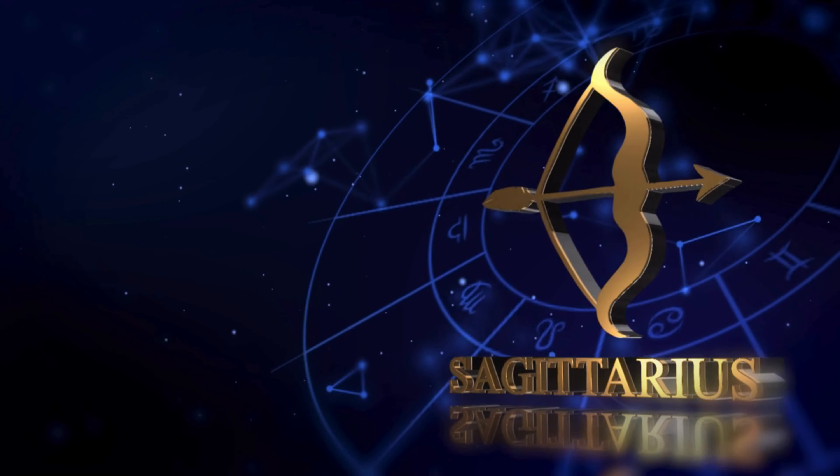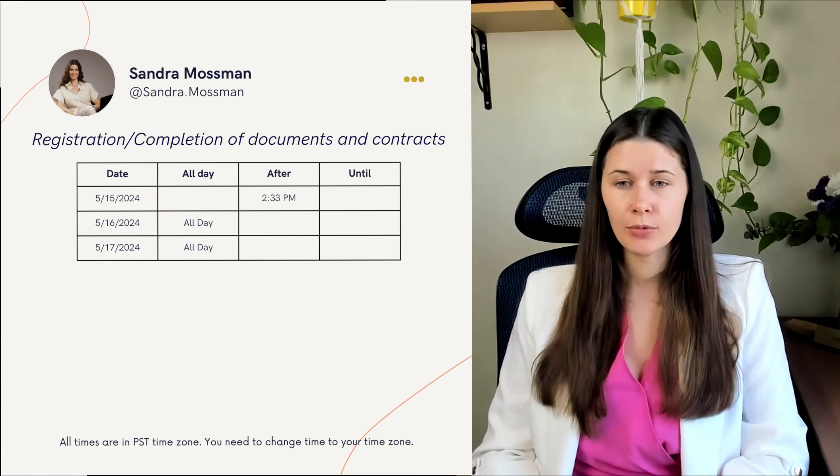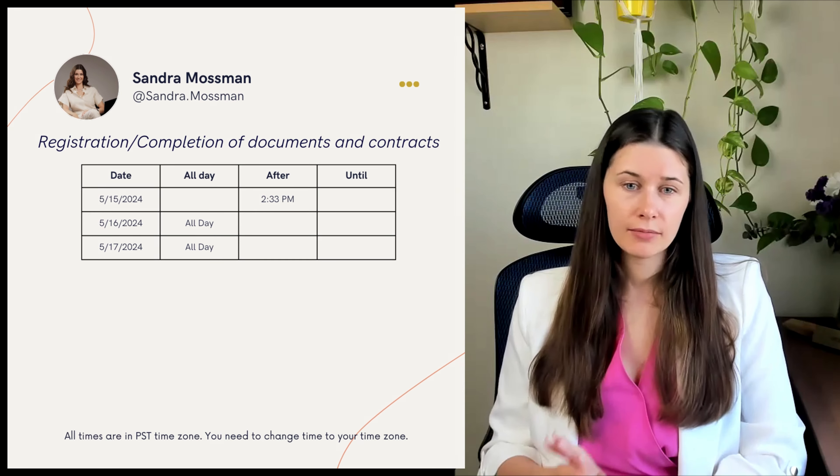If you need to talk with local authorities, get permits, work on benefits, housing, or anything involving government or state agencies, May 23 all day and May 24 all day are good dates — likely because the moon is in Sagittarius. For writing documents or signing contracts — such as when hiring people or finalizing deals — May 16 all day and May 17 all day are perfect timing.